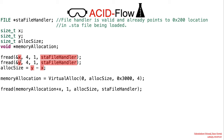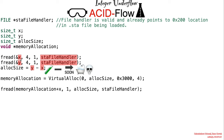Then the allocation size is determined by performing arithmetic subtraction. And as we suspect, there is an opportunity for an integer underflow.